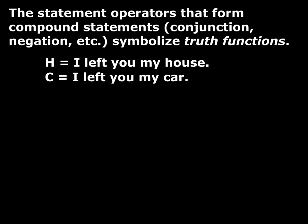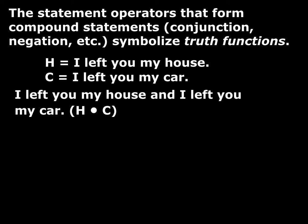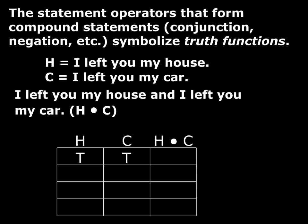Here's one of the key ideas: the statement operators from chapter one — conjunction, disjunction, conditional, negation — not only form compound statements from simpler ones, they also symbolize truth functions. They do both jobs simultaneously. Here are two atomic statements: 'I left you my house' (H) and 'I left you my car' (C). Suppose I'm making out my will and I say 'I left you my house and I left you my car.' We can look at the truth value of that compound as a function of the truth values of its inputs — and we make a table with columns H, C, and the conjunction H and C.